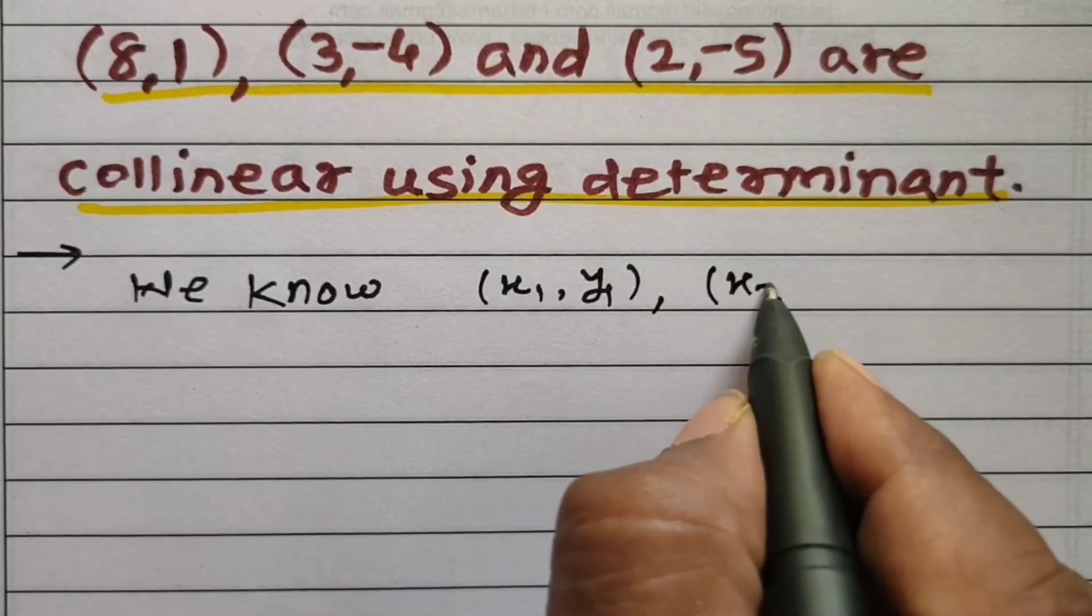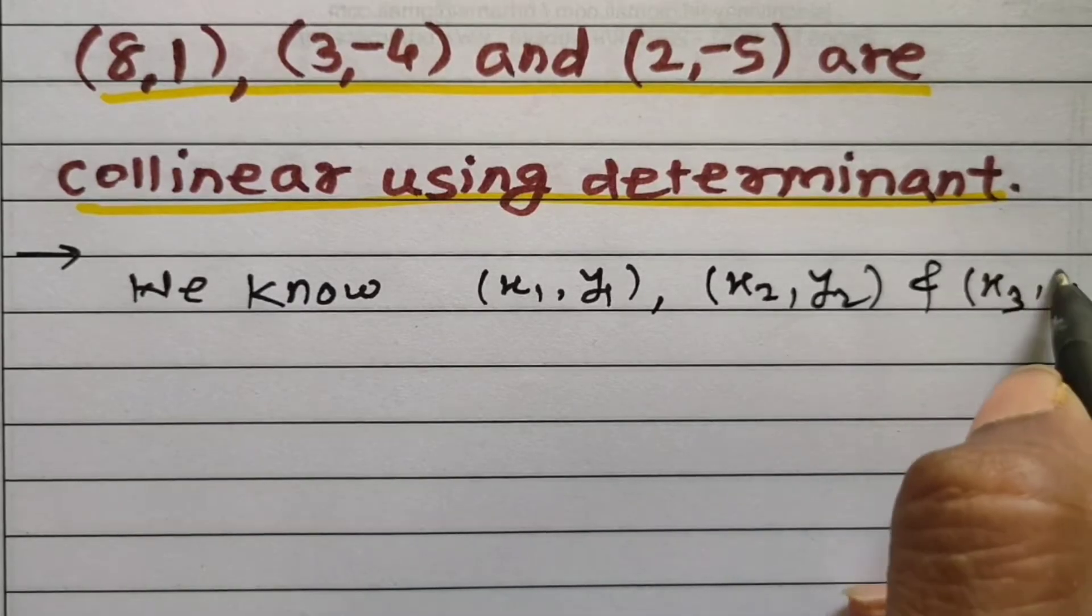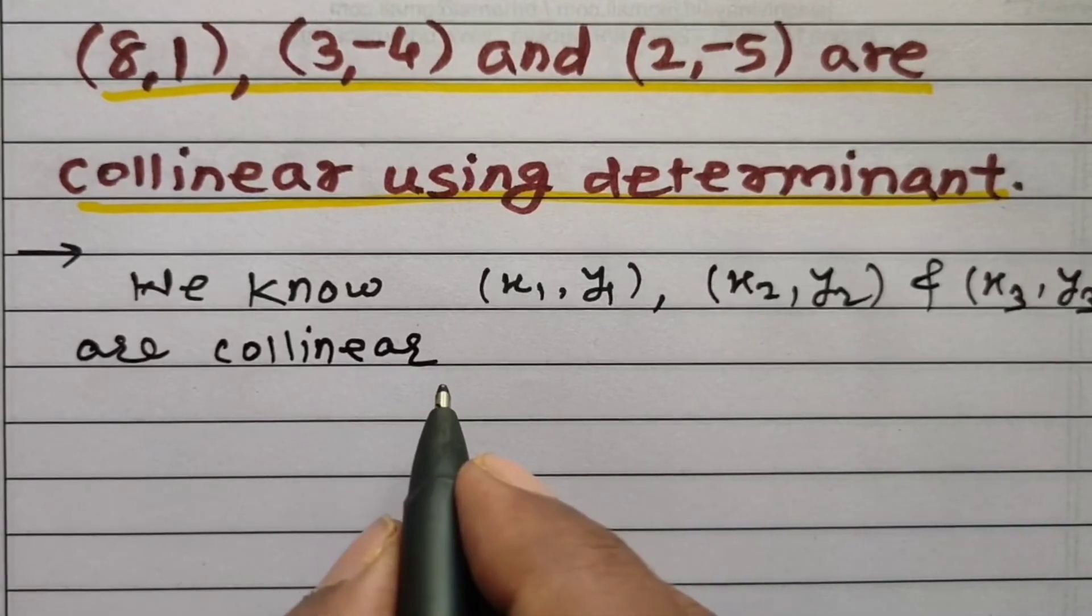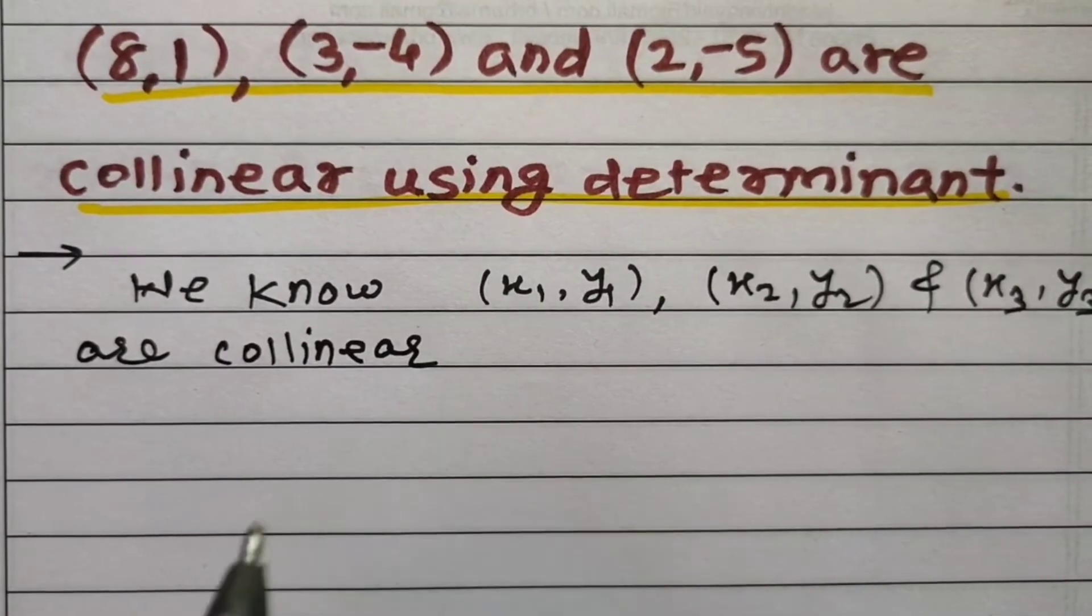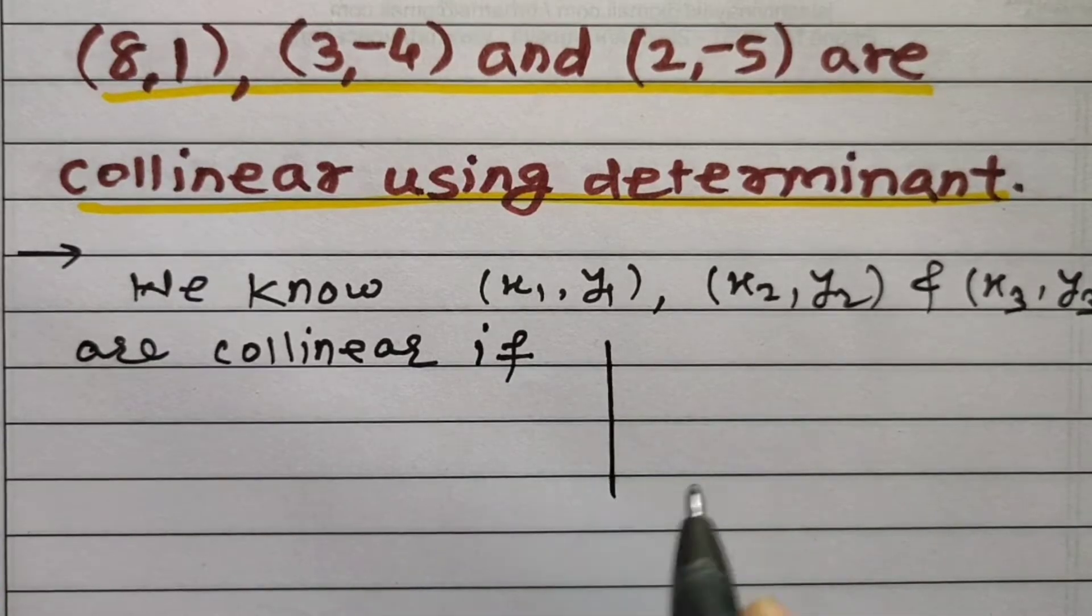y1), (x2, y2) and (x3, y3) are said to be collinear if the condition of collinearity is satisfied. If this determinant value is equal to 0,